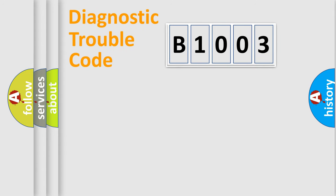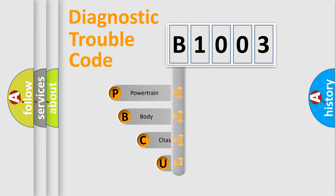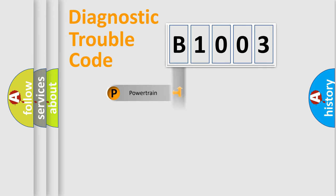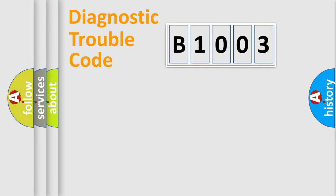First, let's look at the history of diagnostic fault code composition according to the OBD2 protocol, which is unified for all automakers since 2000. We divide the electric system of automobile into four basic units: Powertrain, Body, Chassis, and Network. This distribution is defined in the first character of the code.